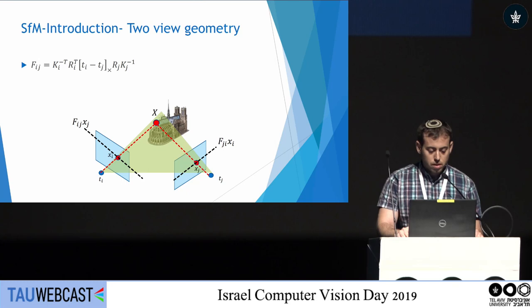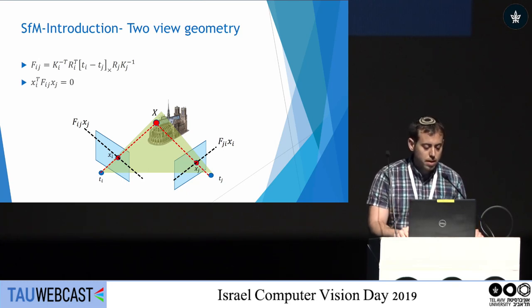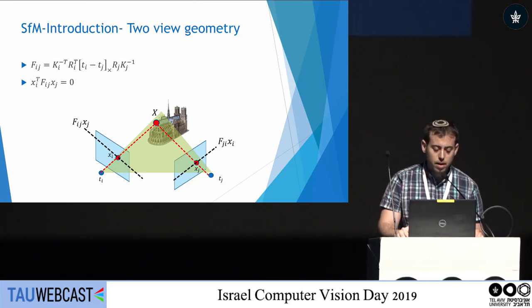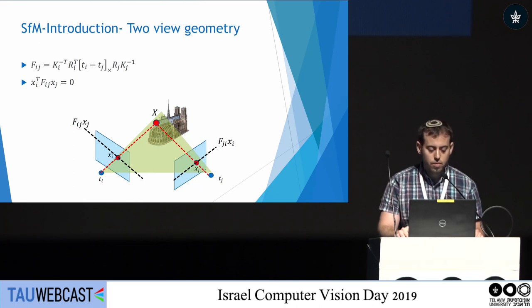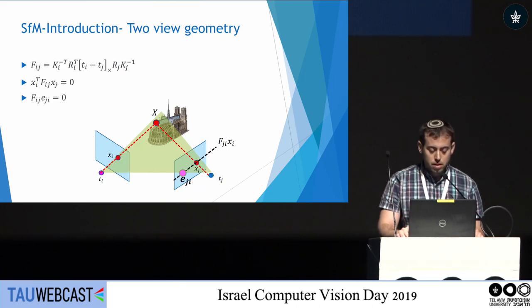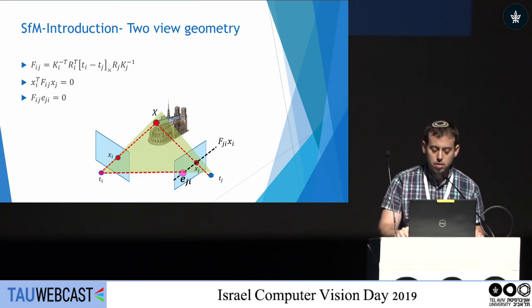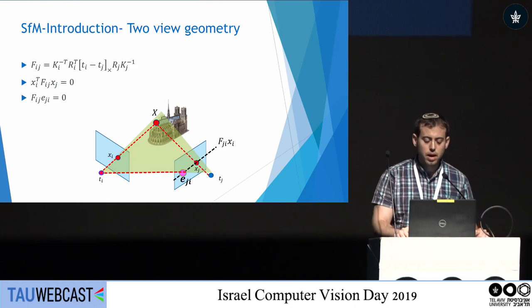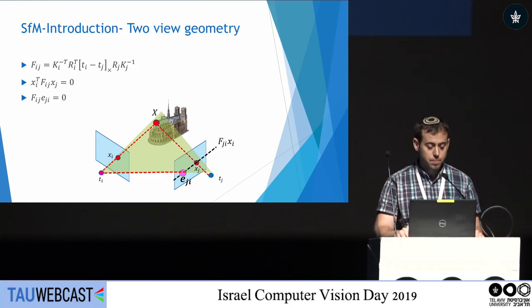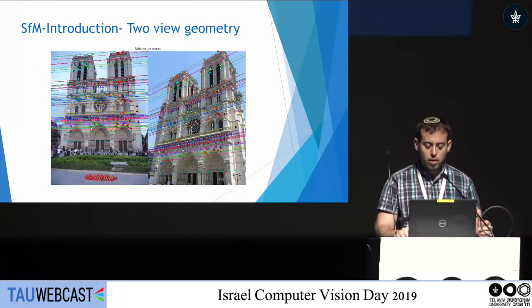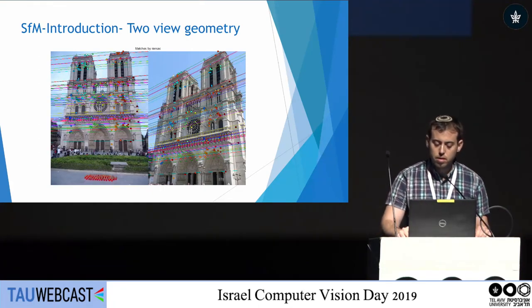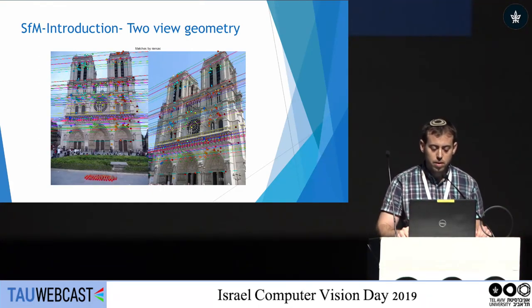Corresponding points must lie on corresponding epipolar lines, which can be expressed by the algebraic constraint: XI transpose FIJ XJ equals 0. The null space of FIJ is called the epipolar point, which is actually the projection of the other camera center TI to image J. Here you can see a visualization of corresponding points and corresponding epipolar lines between two images.